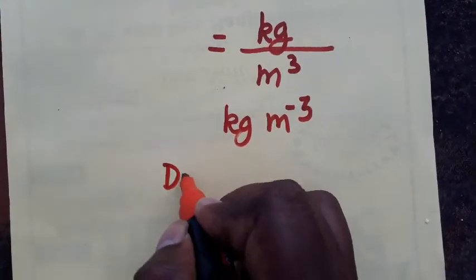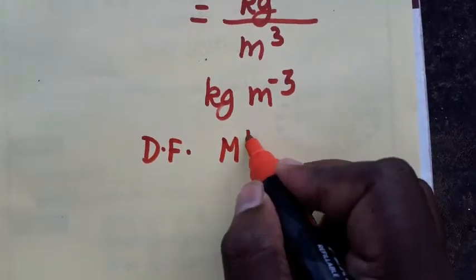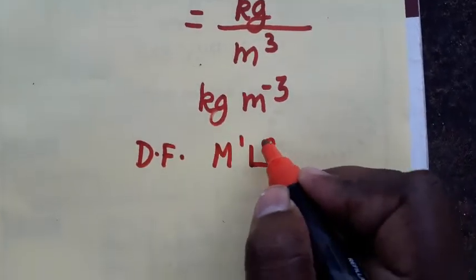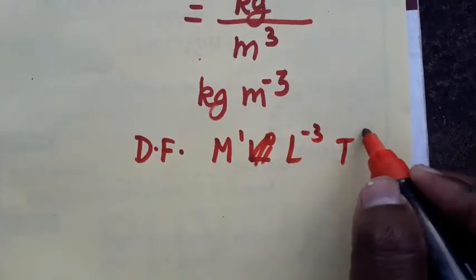Dimensional formula for density will be M. Mass will be M power 1. Length will be minus 3. And time period will be 0.